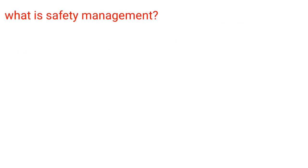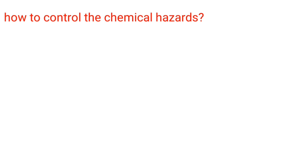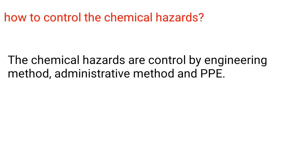What is safety management? Safety management is an act and science of setting safety objectives of an industrial company. How to control chemical hazards? Chemical hazards are controlled by engineering methods, administrative methods, and PPE.